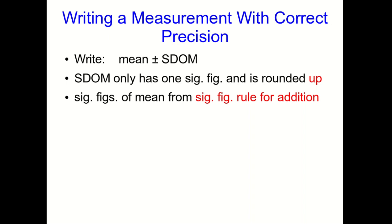If you did it all again, if you do a new data set and get an SDOM out of it, you'll find they will usually only agree in the first sig fig. And then the sig figs for the mean is going to come from our sig fig rule for addition. Let me show you how that works.